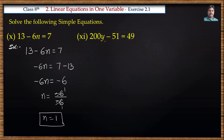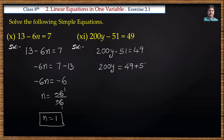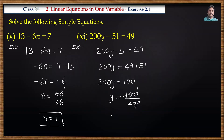Next problem: 200y minus 51 is equal to 49. We transpose minus 51 to the right side, it becomes plus 51: 200y is equal to 49 plus 51, which is 100. We need y value, so divide by 200: y is equal to 100 by 200, which simplifies to 1 by 2.